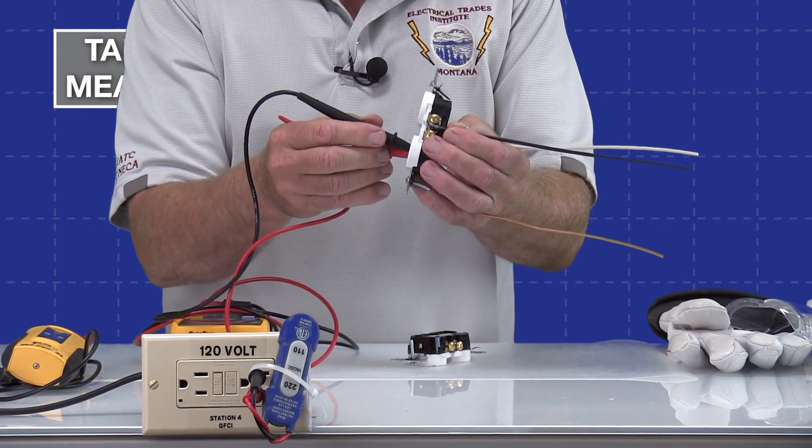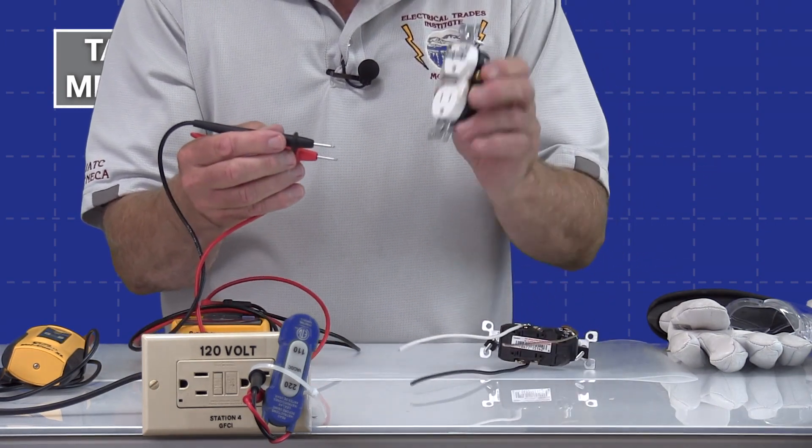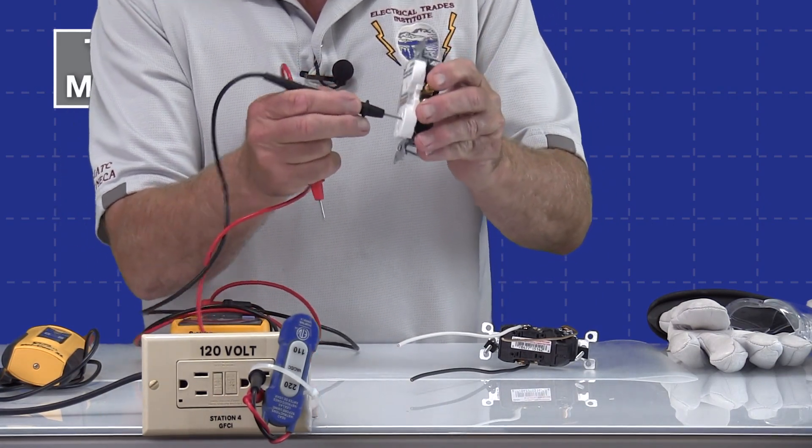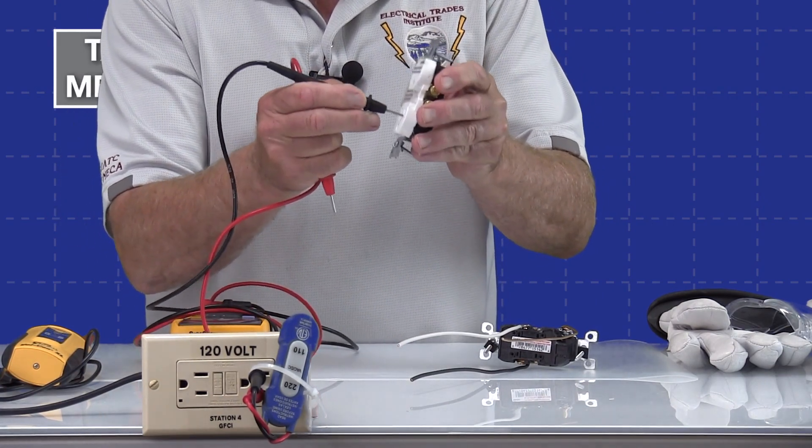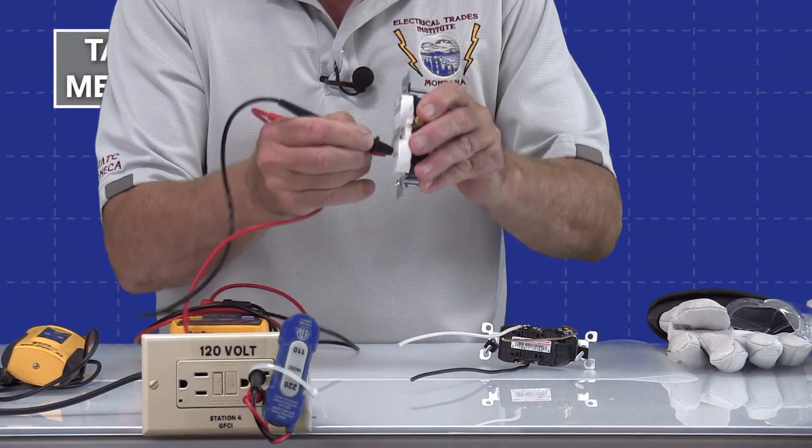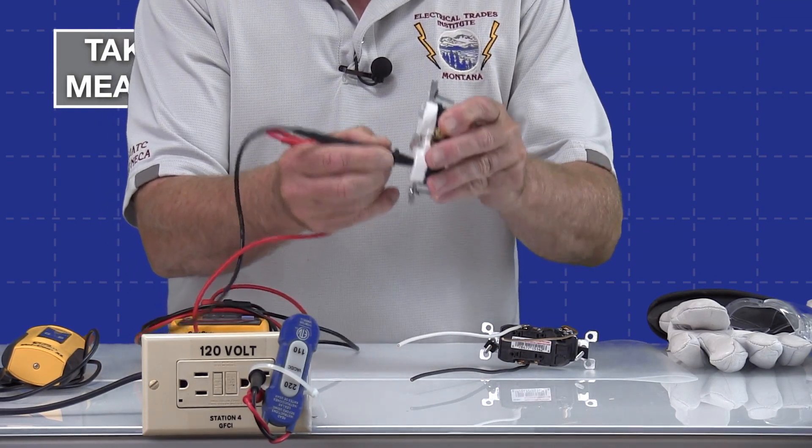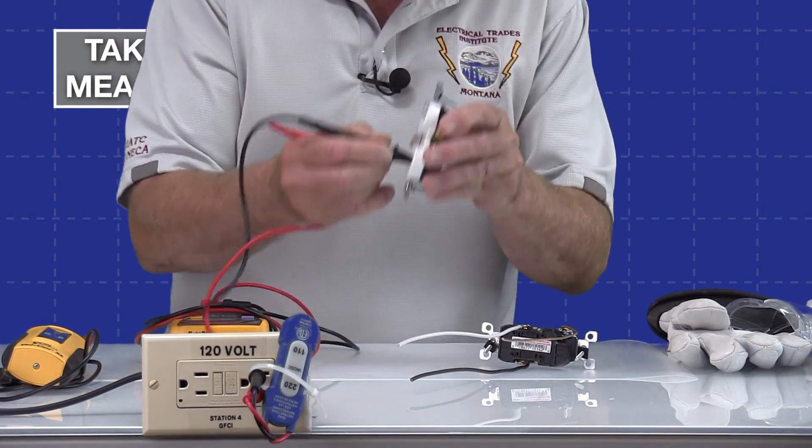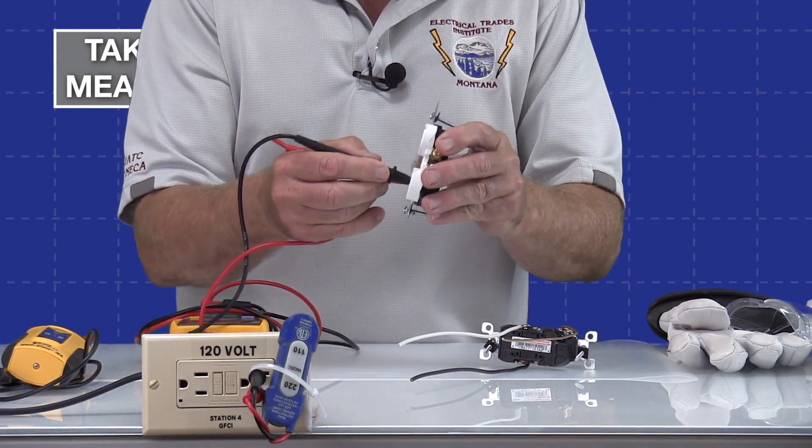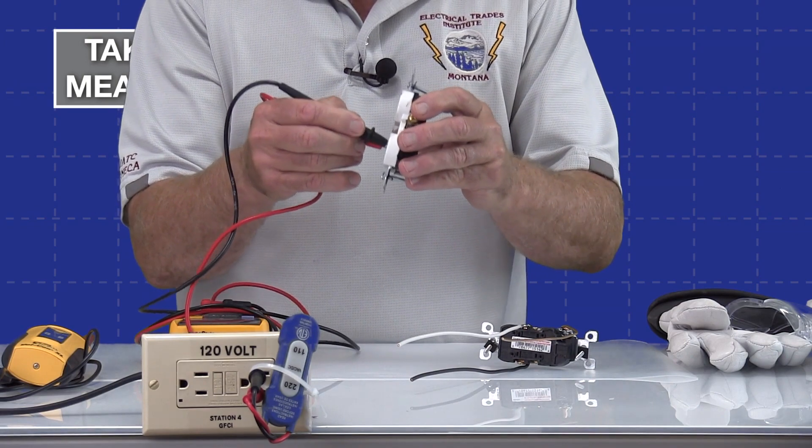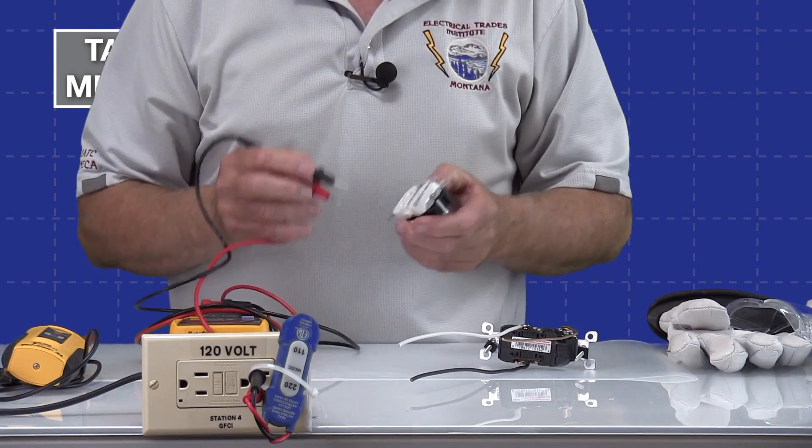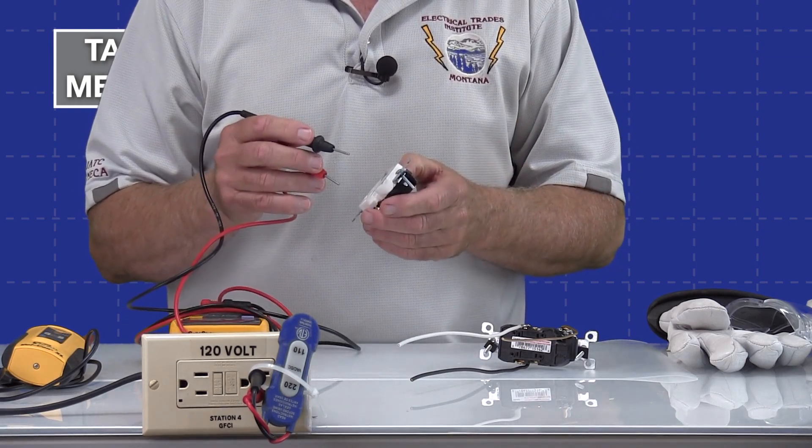That being said, the newer type of receptacle is a tamper resistant receptacle like this, and it will not allow you to use just one side. You can't insert it in one side, you actually have to have both sides, or it won't open up the little windows. So it kind of ends that argument. But the reason I'm telling you this is because I'm going to take measurements using only one probe when I do the voltage test on my GFCI receptacle just for illustration purposes, and I wanted to make sure you understand that's not really the proper way to take a voltage measurement.